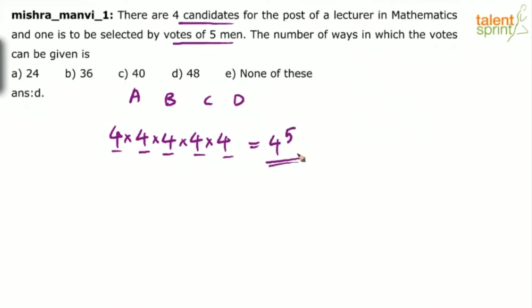So the number of ways in which the votes can be given is four to the power five, which is option E — none of these.